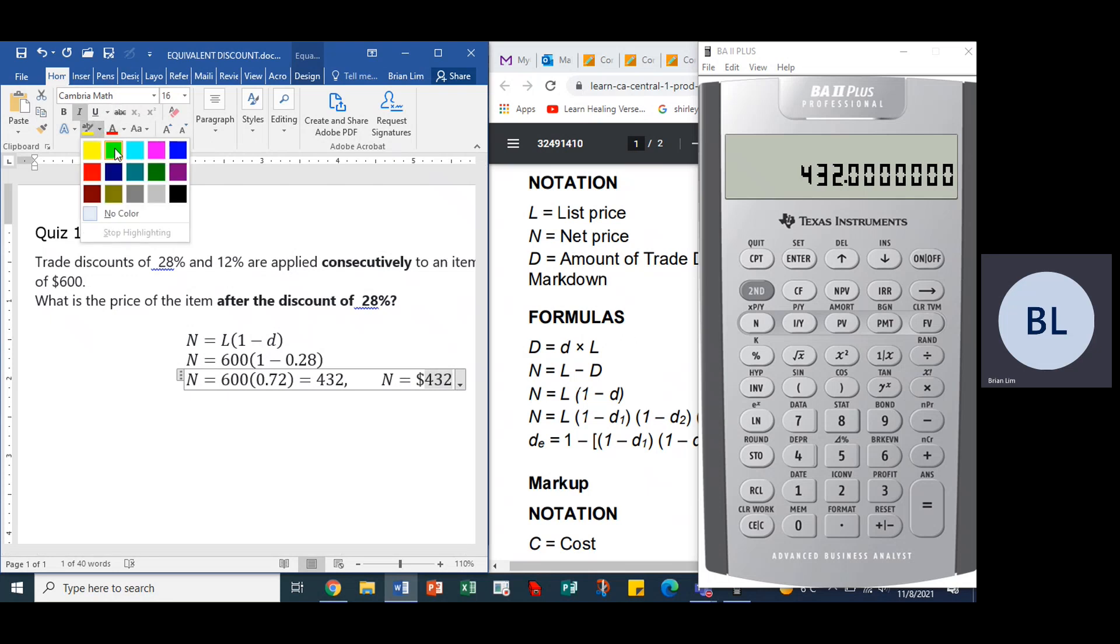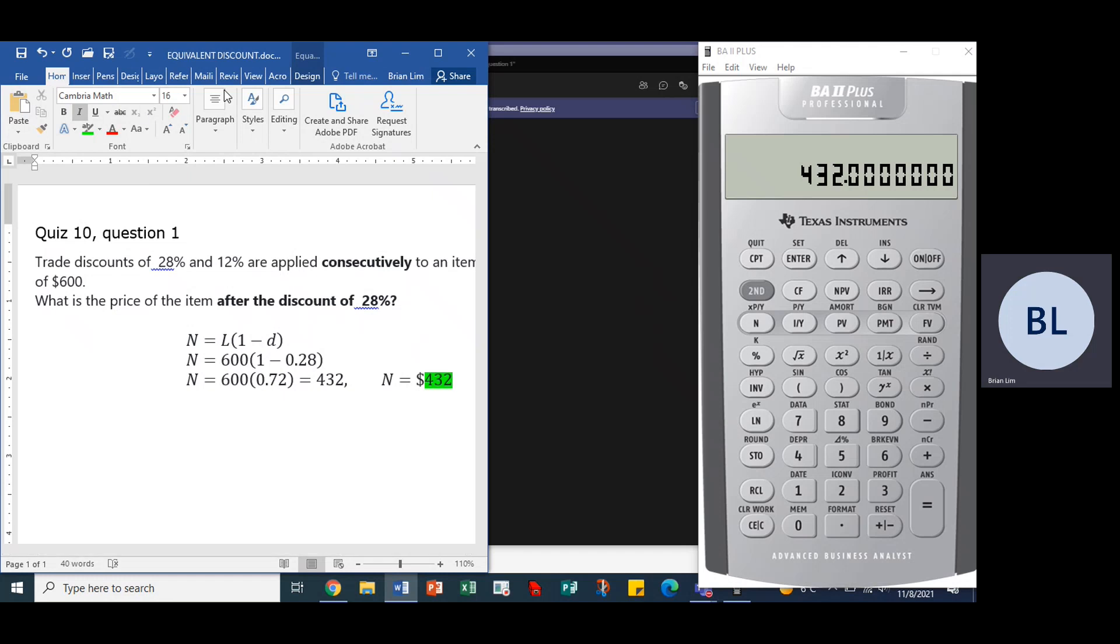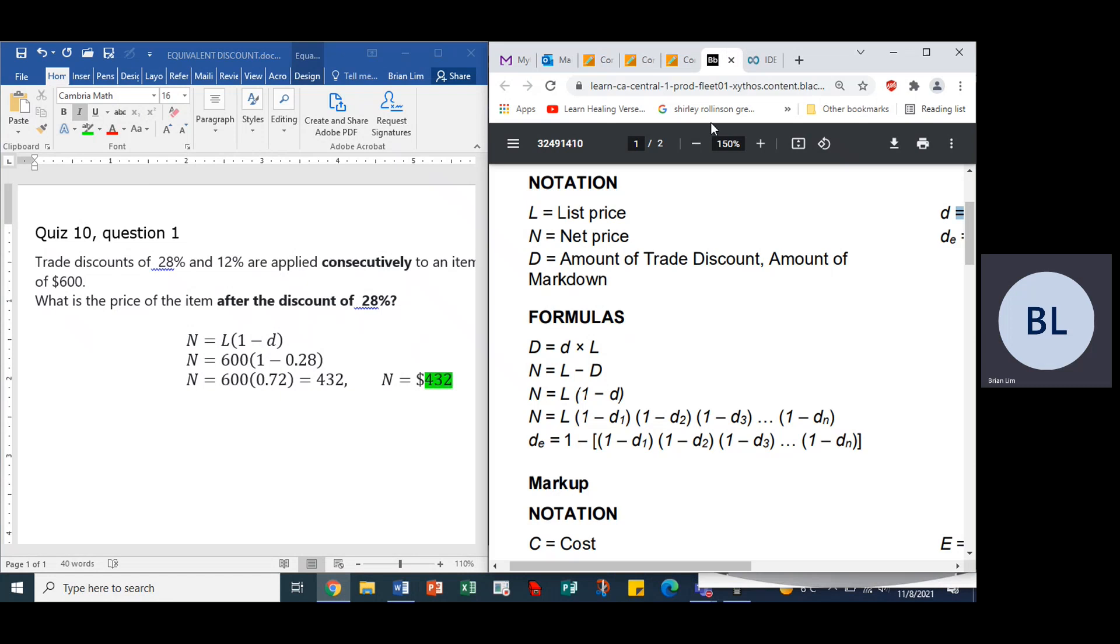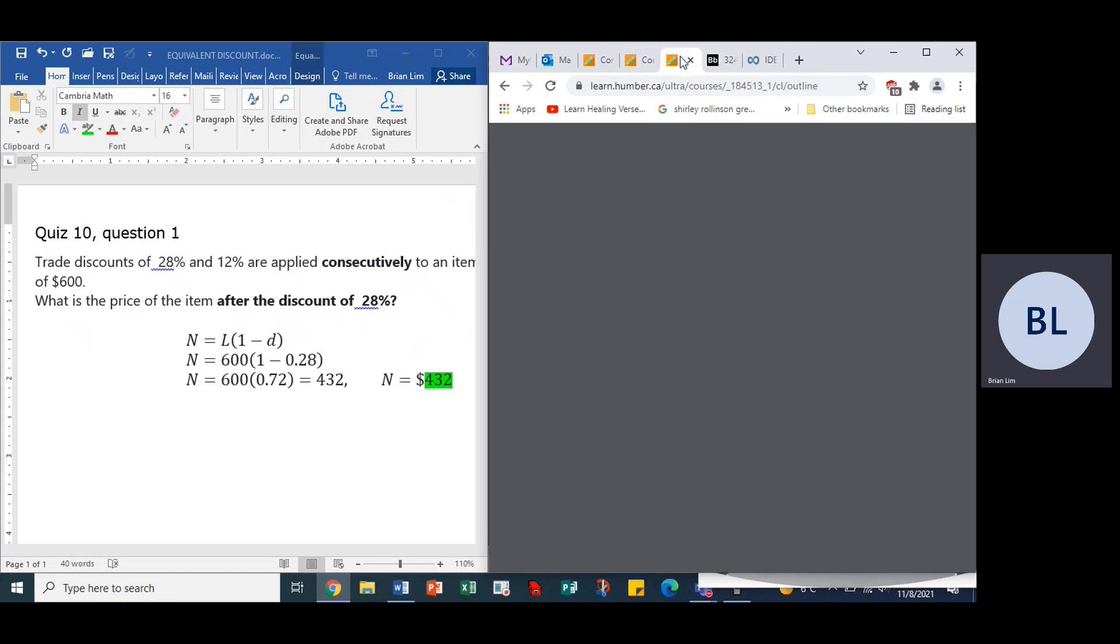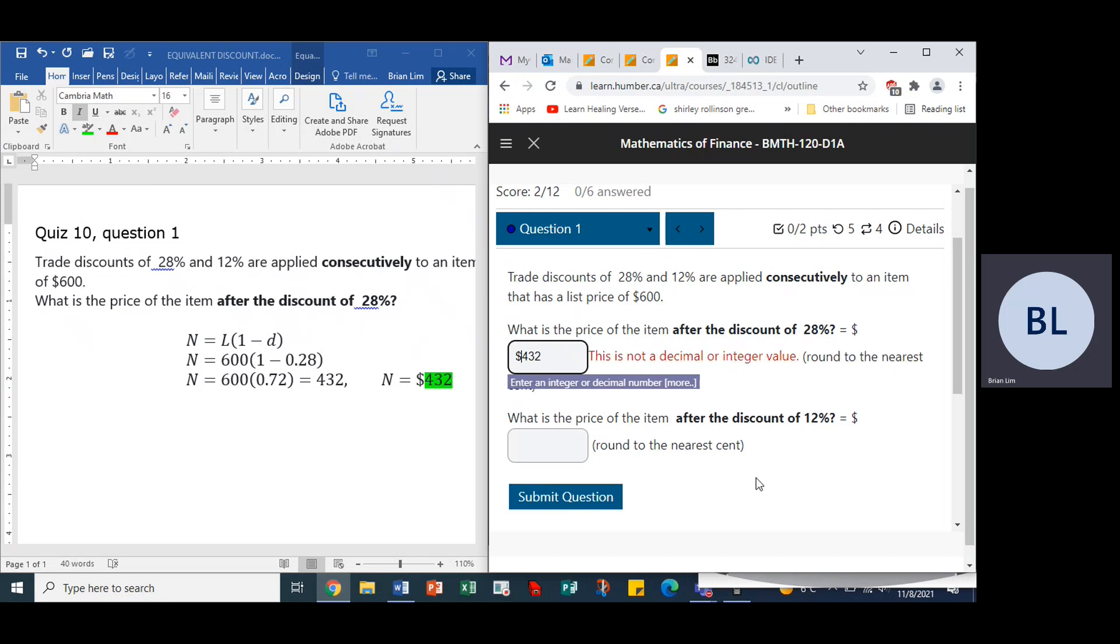We will put it in green and go back to our question. The price of the item after the discount of 28% is $432. I think we could even put in the dollar sign in the answer. I hope it accepts it.